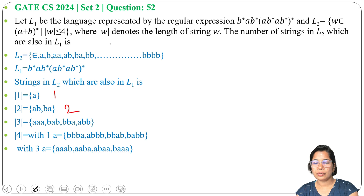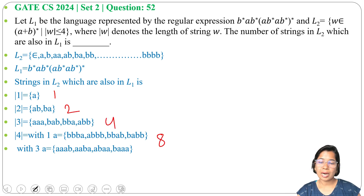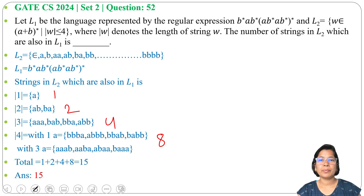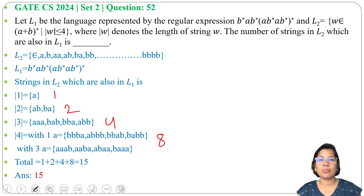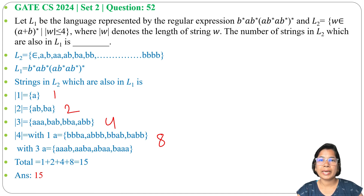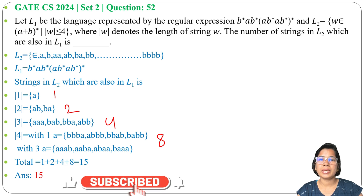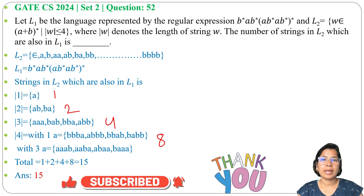Adding all lengths together: length 1 gives 1, length 2 gives 2, length 3 gives 4, and length 4 gives 8. So 1 plus 2 plus 4 plus 8 equals 15. The answer is 15 — a total of 15 strings of L2 are also in L1. I have already discussed regular language and regular expressions; just go through the lecture. If this lecture was helpful, please like, share, and subscribe. Thank you.